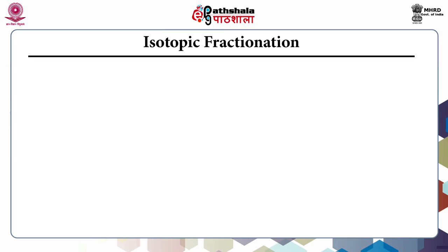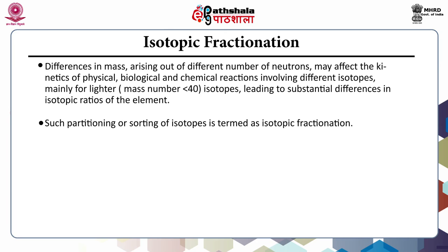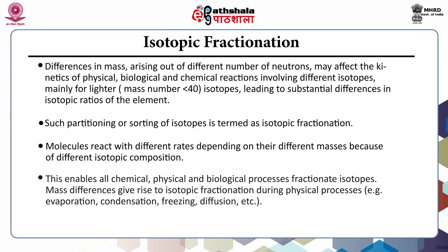Differences in mass arising from different numbers of neutrons may affect the kinetics of physical, biological, and chemical reactions involving different isotopes — mainly for lighter isotopes whose mass is less than 40. This leads to substantial differences in isotopic ratios, and such partitioning or sorting of isotopes is termed isotopic fractionation. Molecules react at different rates depending on their different masses, enabling all chemical, physical, and biological processes to fractionate isotopes. Examples of physical processes include evaporation, condensation, freezing, and diffusion.